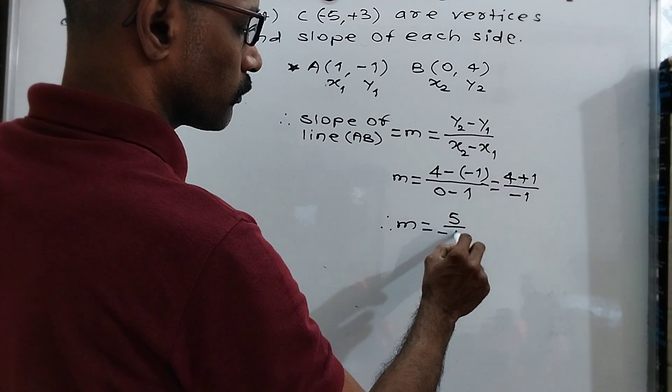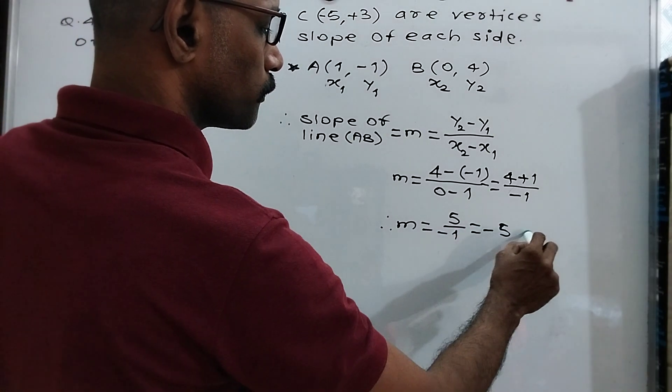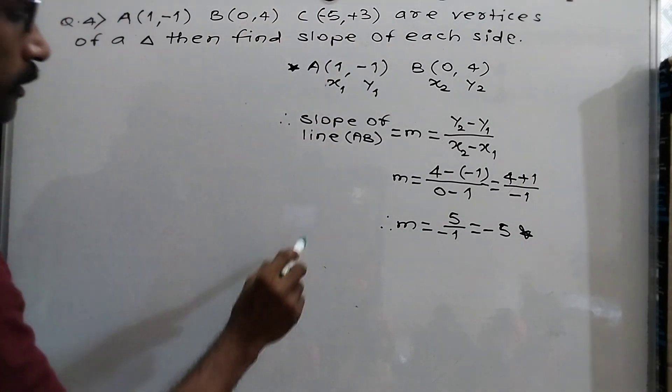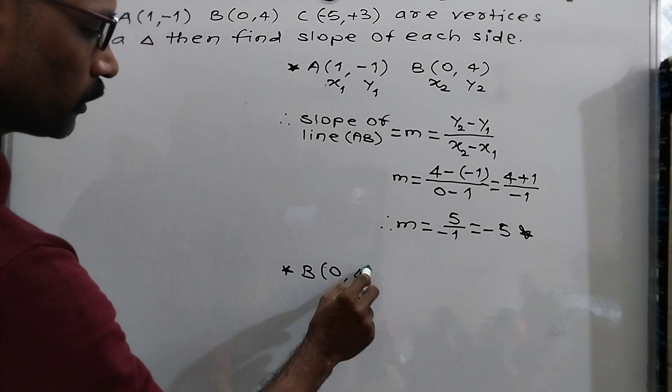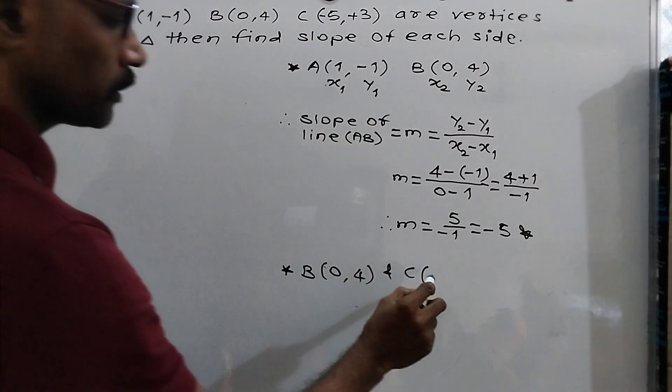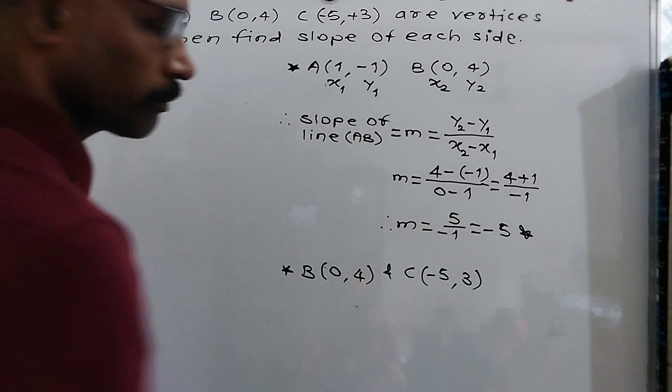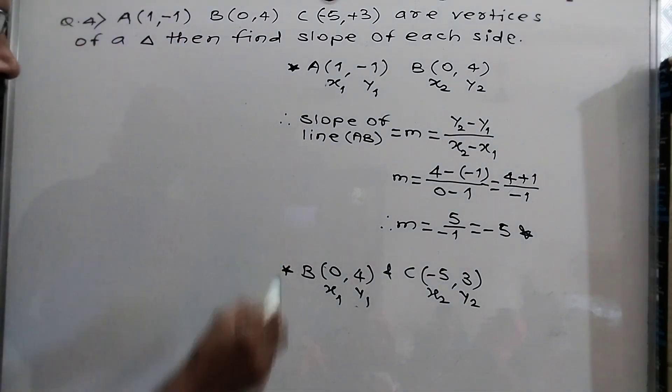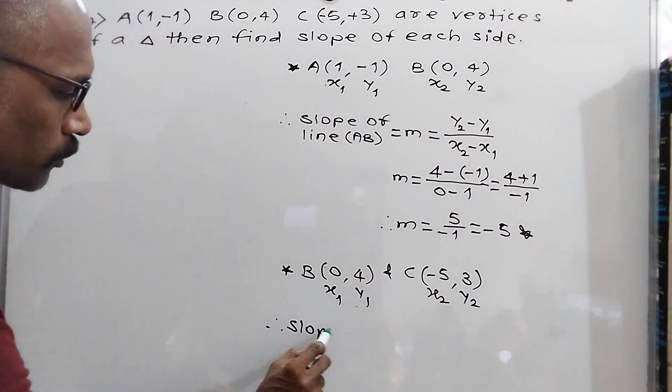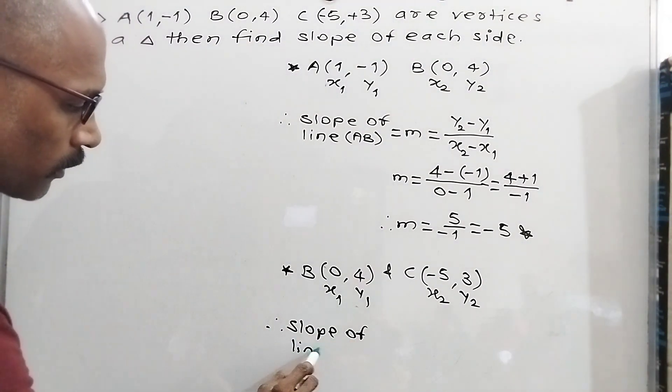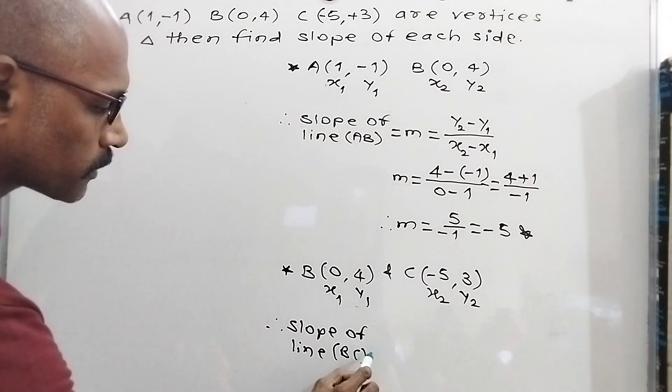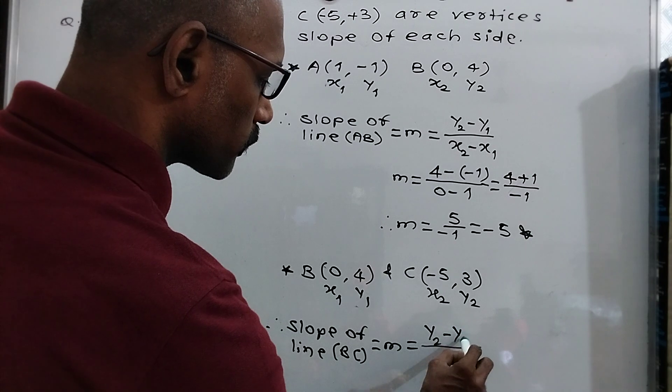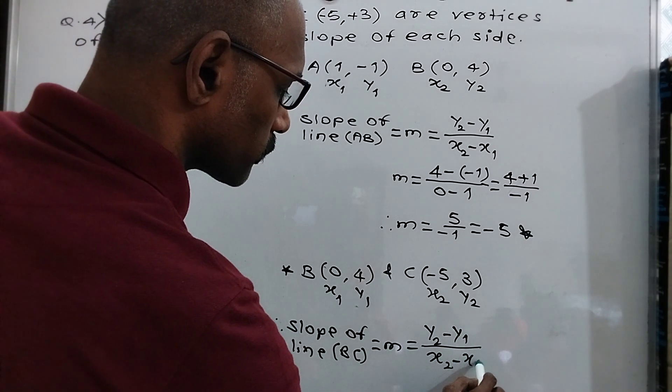Did you understand? Same way we will find slope of BC. Now we write here B(0,4) and C(-5,3). Then x1, y1, x2, y2. Then same way, slope of line BC is equal to m is equal to y2 minus y1 upon x2 minus x1.